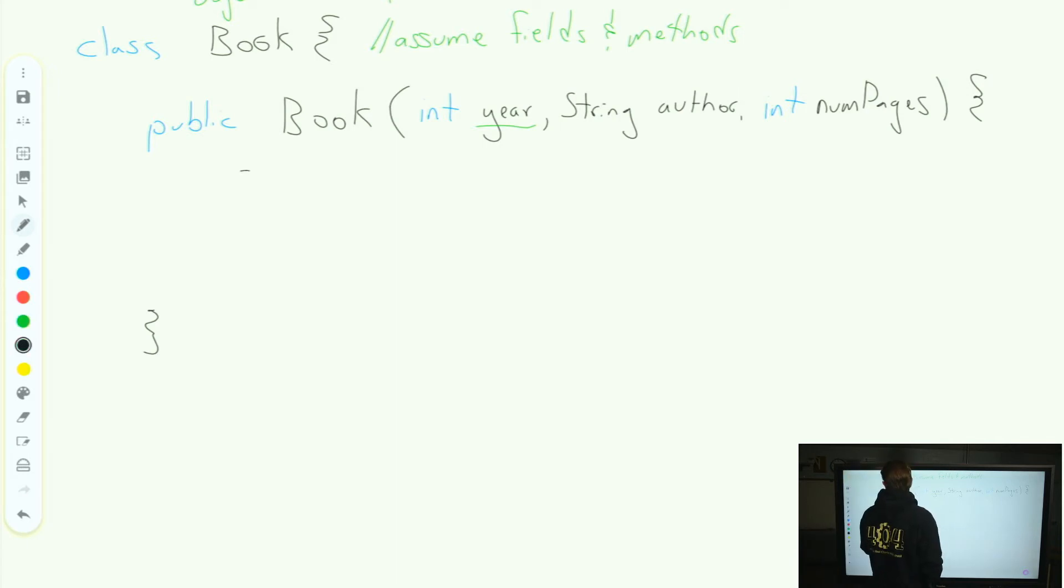We're going to use our mutator methods. We might say setYear and we'll pass in year, and we'll say setAuthor and we'll pass in author, and we'll say setPages and we'll pass in pages.